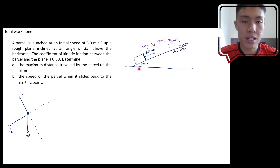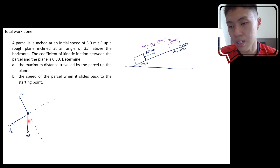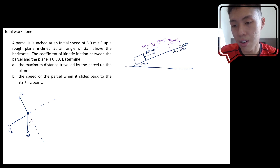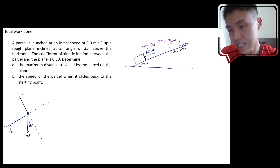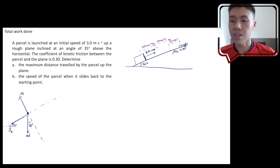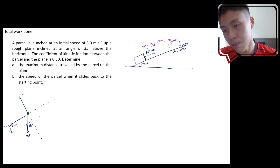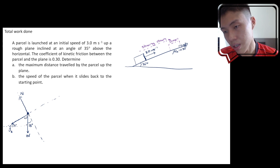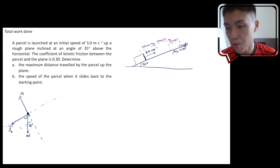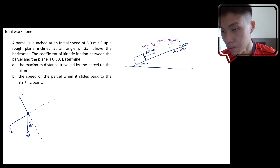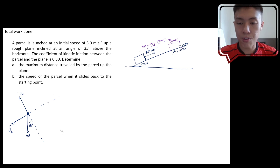Let's put in the angle. The 35-degree angle is over here, and this translates to 35 degrees on the free body diagram. We know the horizontal is at the base and this is a right-angle triangle, so we can confirm 35 degrees is correctly labeled. Our free body diagram is now ready.